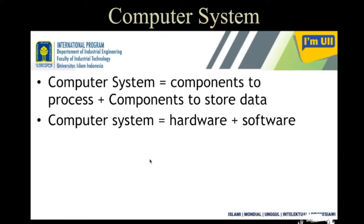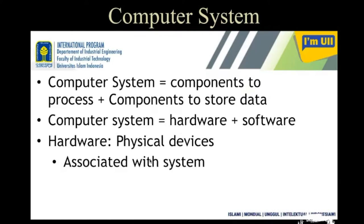Another way you can say that a computer system has some hardware and some software. What is hardware and software? Hardware is like physical devices — whatever you see in front of you. If you have a desktop in front of you, whatever you can visualize is a physical device associated with that computer system, and all of that together or individually is called hardware.